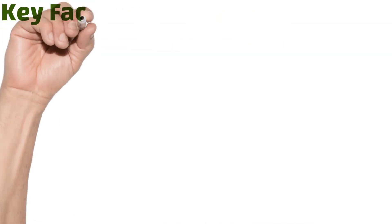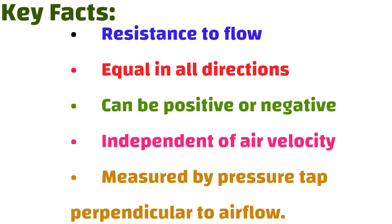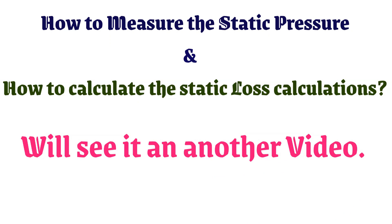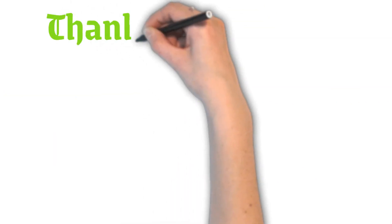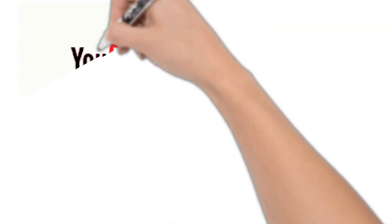Some key facts for static pressure to remember: one — resistance to flow; two — equal in all directions; three — can be positive or negative; four — independent of air velocity; five — measured by a pressure tap perpendicular to airflow. How to measure static pressure and how to calculate static loss will be covered in another video. Thank you all — please like and comment, share my channel with your friends, and subscribe for more updated videos.